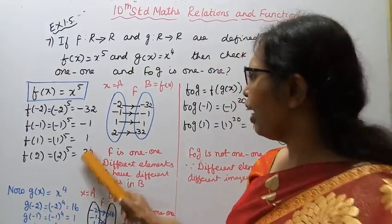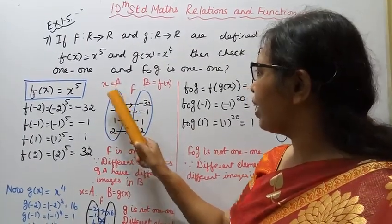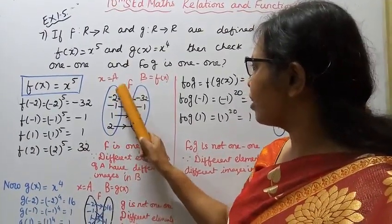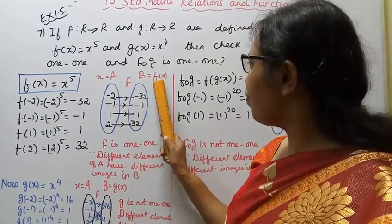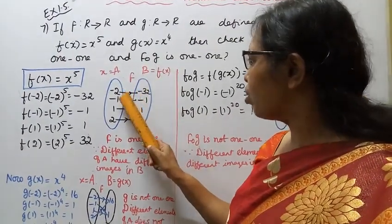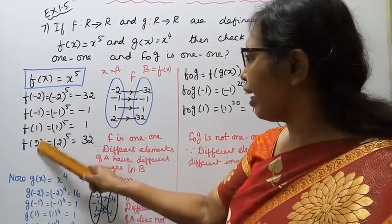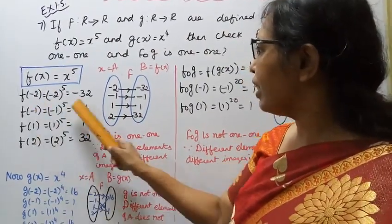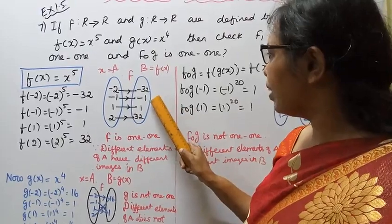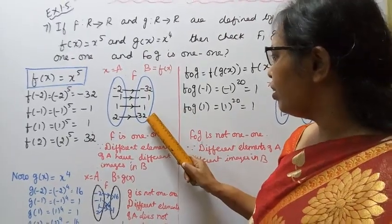Now let's arrange this in a table. The x values taken are minus 2, minus 1, 1, 2. Corresponding f(x) values are minus 32, minus 1, 1, 32.